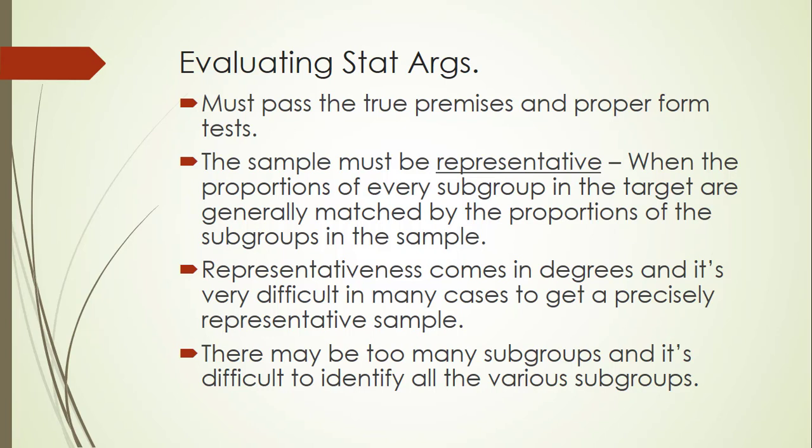You should try to have a representative sample as best as possible, and it can come in matters of degree. In many cases, you shouldn't expect to get a perfectly representative sample. There may be too many subgroups, and it's difficult to identify all the various subgroups. But you can make statistical arguments so long as they're generally representative — they don't have to be exactly representative.